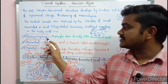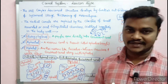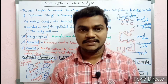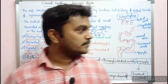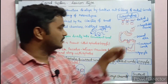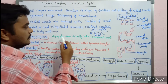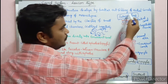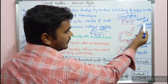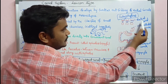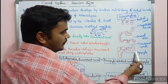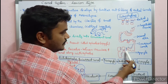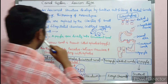In the Euripylous type, the apopyles open directly into the excurrent canals. So, in this type, the apopyles open directly into the excurrent canals without any intermediate narrow canal. The pathway is: radial canals, then dermosteum, then excurrent canals. So, apopyles opening directly into the excurrent canal is the Euripylous type.